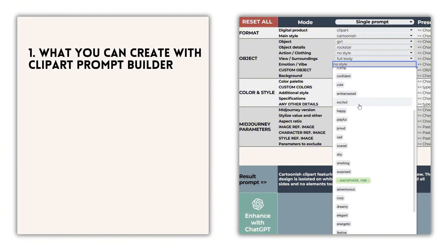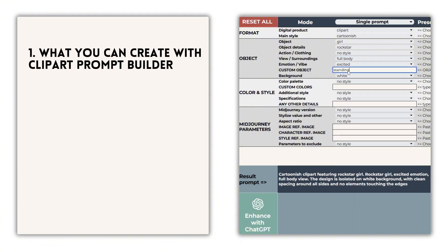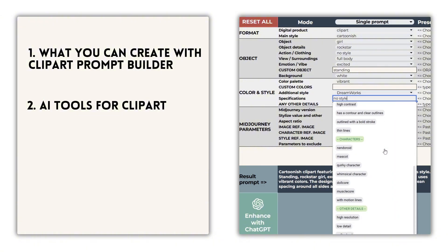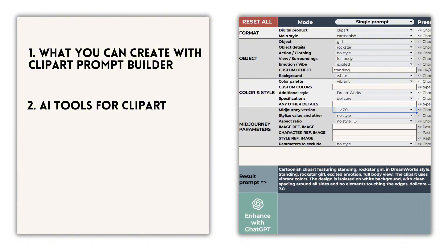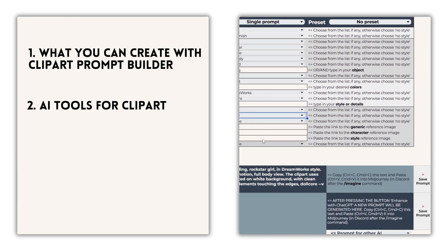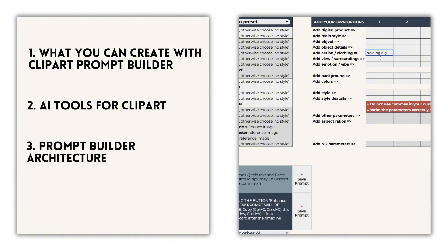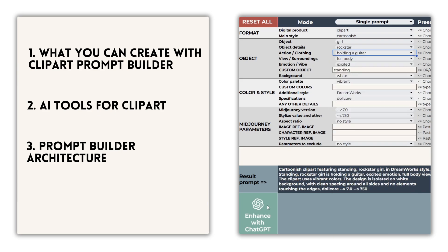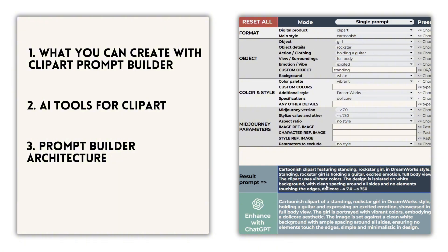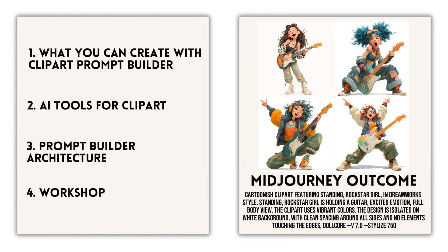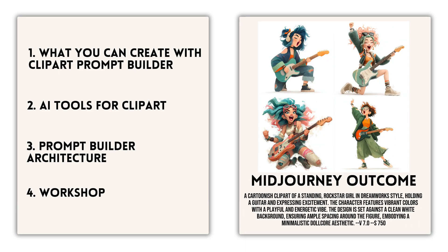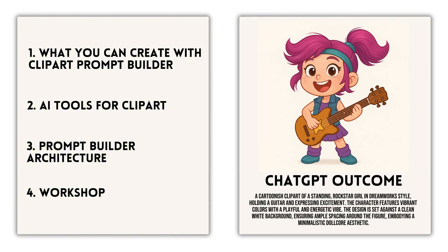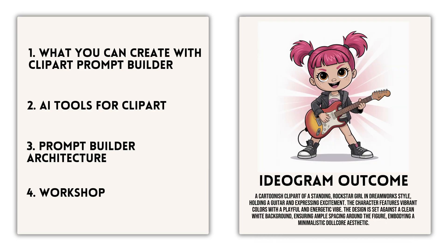Here's what we'll cover. We'll start by exploring the kinds of images this Prompt Builder is designed to create, with real examples generated in Midjourney. Then we'll take a closer look at how other AI tools like ChatGPT, Ideogram, Leonardo, and Bing handle clipart generation, highlighting their unique strengths, limitations, and standout features. Next, we'll walk you through the updated structure of the Clipart Prompt Builder, including a breakdown of the drop-down menus and helpful tips to get the best results. After covering the essentials, we'll dive into a hands-on workshop where we create a cute nursery-themed clipart from scratch. We'll also take a quick trip to Canva to finalize our creation — I'll show you how to remove the background and share my tips for designing consistent stickers.